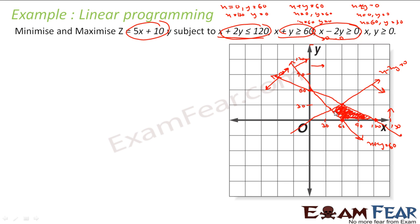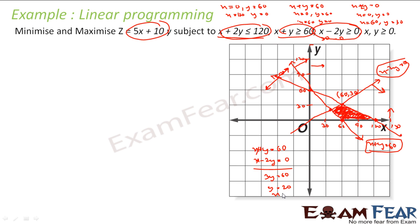This is a closed feasible area. The corner points are: (60, 0), (120, 0), and (60, 30). The fourth point is the intersection of x + y = 60 and x - 2y = 0. Subtracting these equations gives 3y = 60, so y = 20 and x = 40. So the fourth corner point is (40, 20).